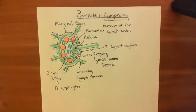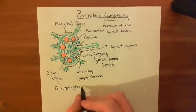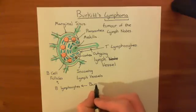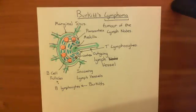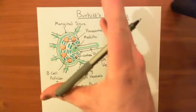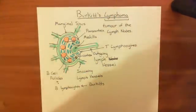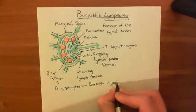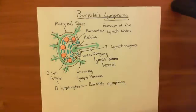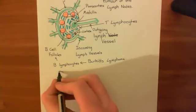So what happens in Burkitt's lymphoma is you basically get a tumour of these B-cells. One of these B-cells is going to get a mutation that leads it to completely over-divide. That's going to cause the B-cell follicle to become absolutely massive — the lymph node is going to be just swollen by this massive B-cell follicle. Let's describe the mutation that is going to occur in one of these initial B-cells.